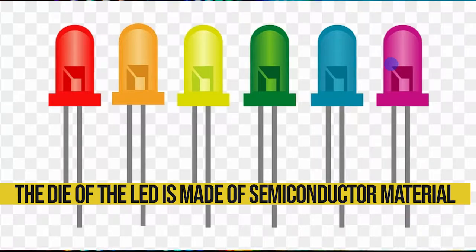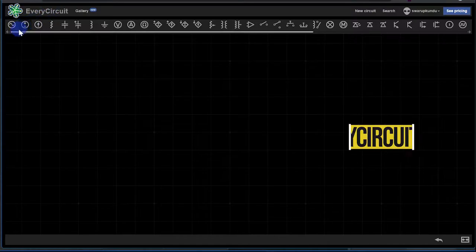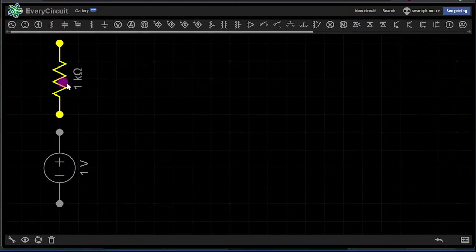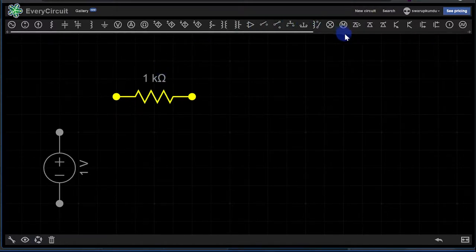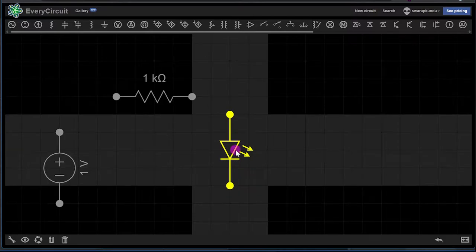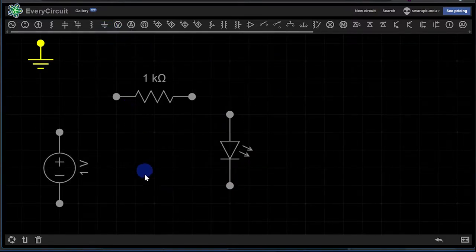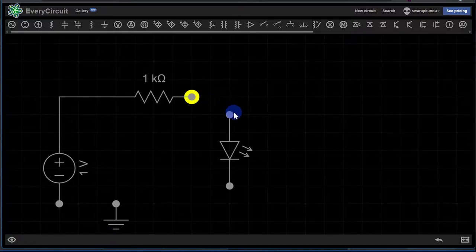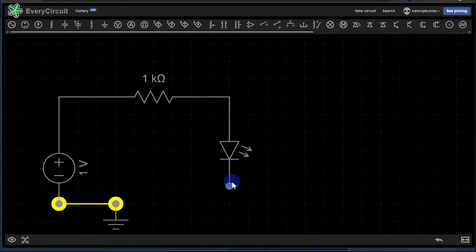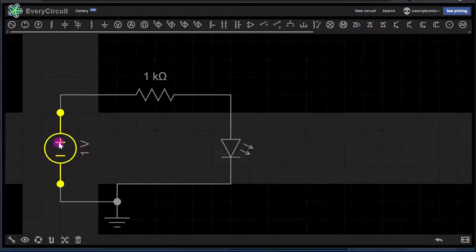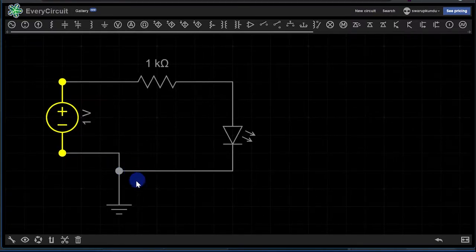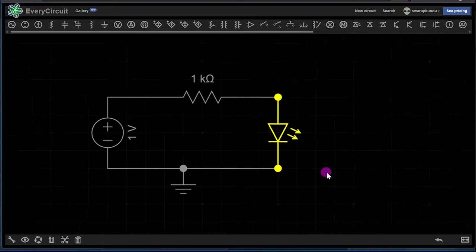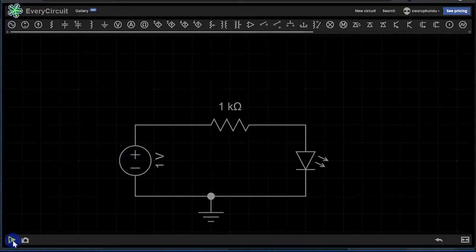Now let's open EveryCircuit. First I'm taking a DC source, testing it. Let's take a resistor, testing it. I'm rotating the resistor here. Then let's take an LED, and let's take the ground. Now let me wire it from the ground to the diode. Let me just readjust it so that it looks neat and clean.